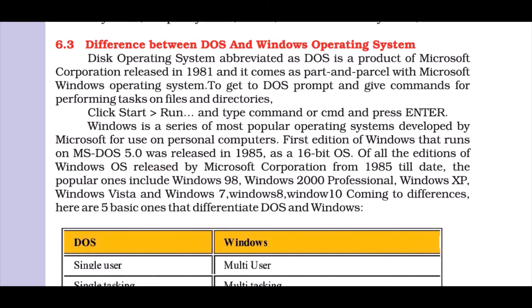From Windows 95, if the user wanted to go to the command prompt, they could access it through the Windows interface. Since then, technology has kept getting updated — Microsoft has continued releasing Windows versions from 1985 onwards. The most popular was Windows 98, followed by Windows 2000 Professional, Windows XP, Windows Vista, Windows 7, 8, and Windows 10.